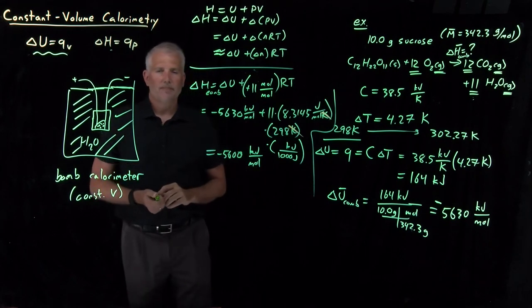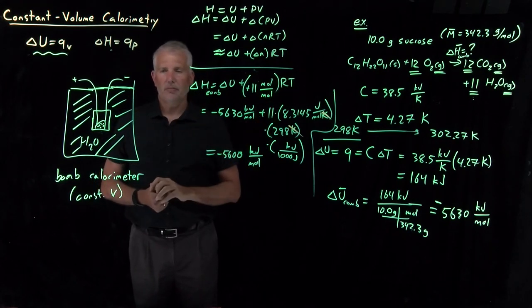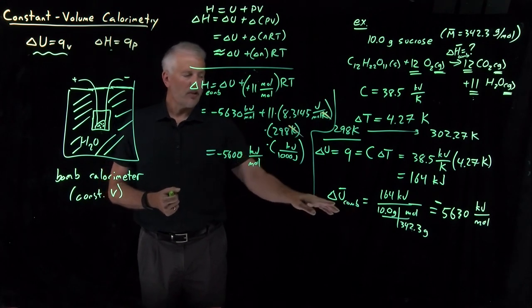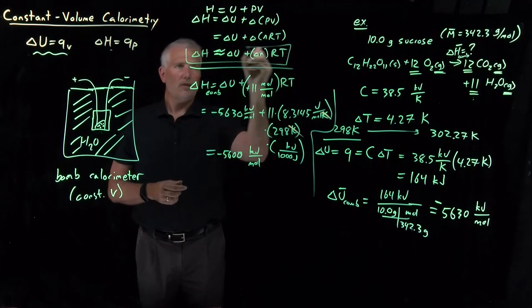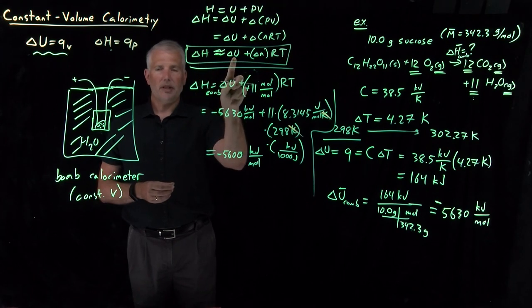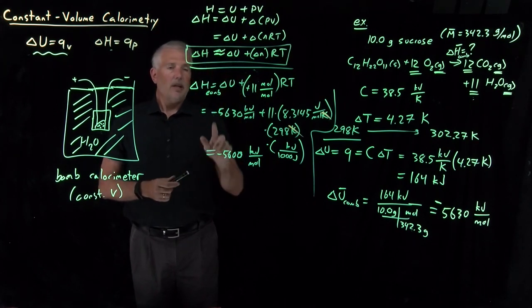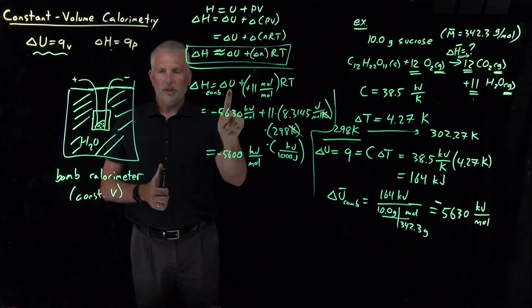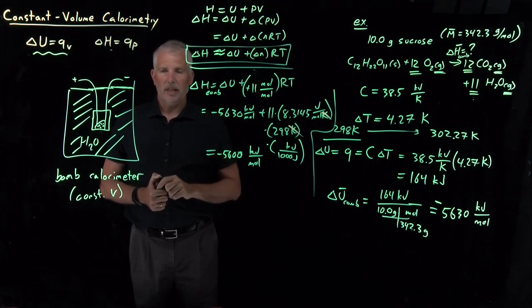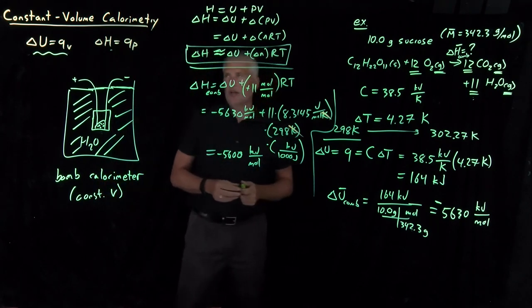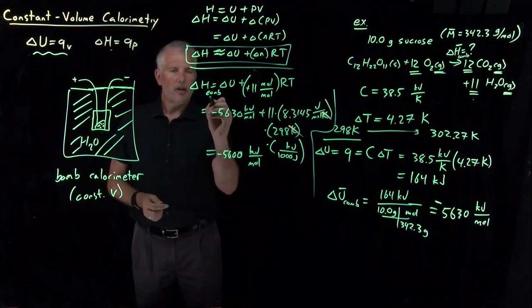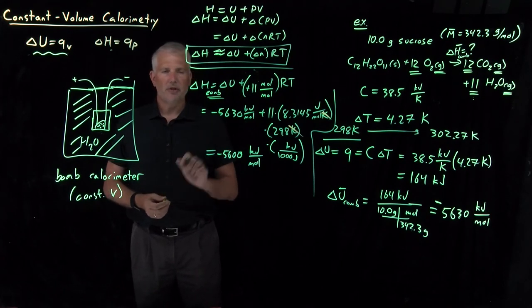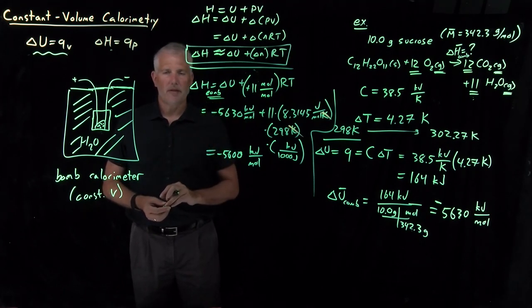Notice what we've done here. In doing a constant volume calorimetry experiment, we can relatively easily calculate the ΔU of the process. We have to do a little bit of extra work, and this equation is very useful for converting the ΔH of a reaction into a ΔU of a reaction and vice versa. We can do a little bit of extra work to convert that ΔU for the process into the ΔH that we may be more interested in. That's an example of doing calorimetry at constant volume. Since we've started to label some of our enthalpy and energy changes with these subscripts, like a ΔH of combustion, turns out there's a lot of different interesting types of enthalpies that we can label, so we'll list a few of those in the next lecture.